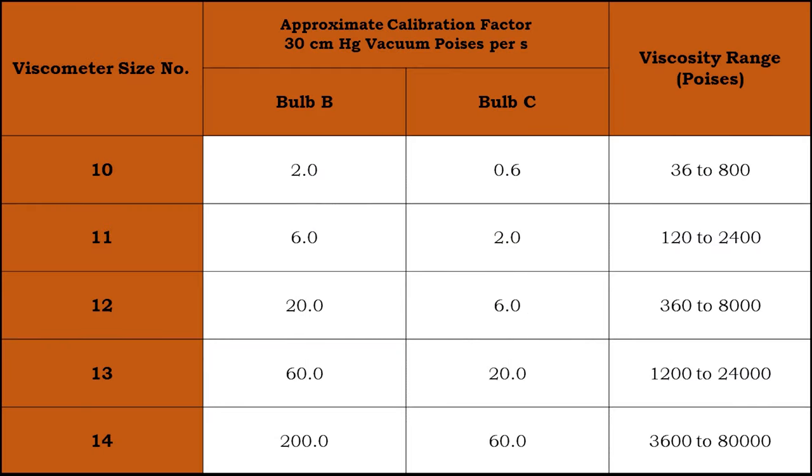This is a Cannon-Manning vacuum capillary viscometer diagram mentioned in IS 1206 Part 2. Different viscometer sizes are selected depending upon the viscosity range. Generally for VG10 to VG40 grade of bitumen, absolute viscosity range is 800 to 4800 poise, so size 12 viscometer is used.